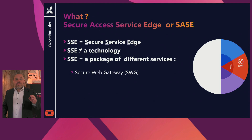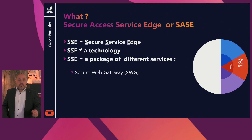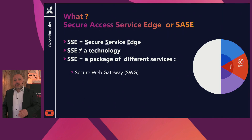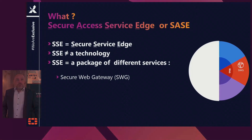The Secure Web Gateway, or SWG, is the first component. It will provide secure access to the web by inspecting web requests versus company policies, and by blocking malicious applications and websites.